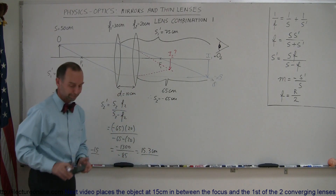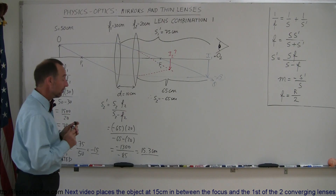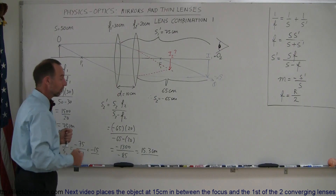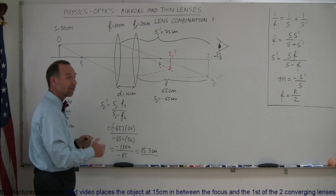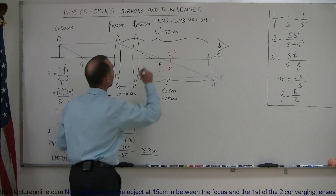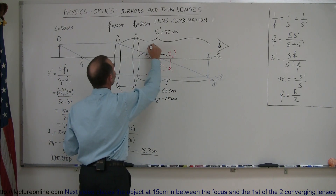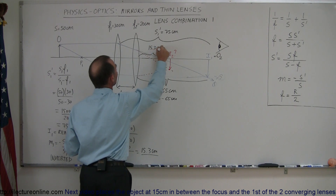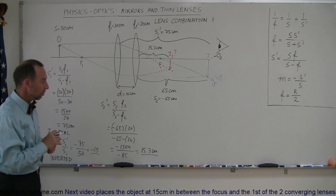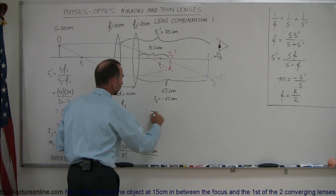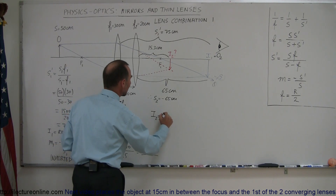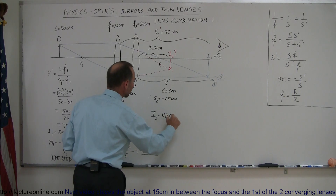What does that mean? Since the result is positive, the image is to the right of the second lens — it is a real image, 15.3 centimeters behind the second lens. So this distance is 15.3 centimeters behind the second lens. Since it's positive, image 2 is a real image, not a virtual image. It really forms there.